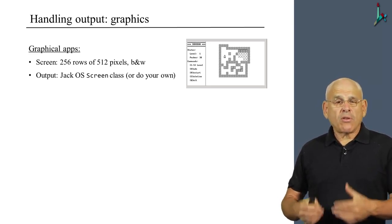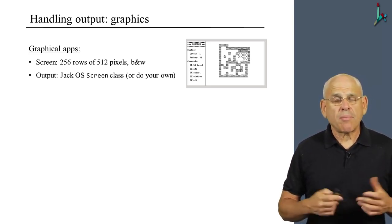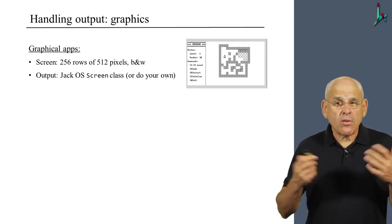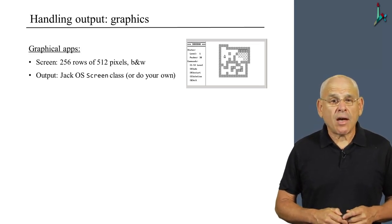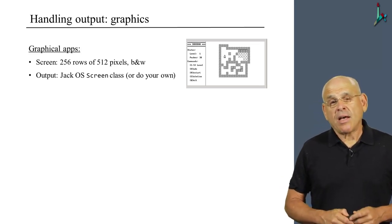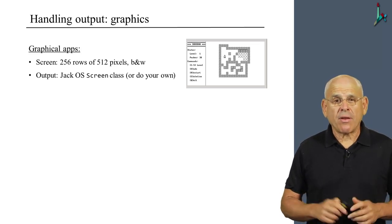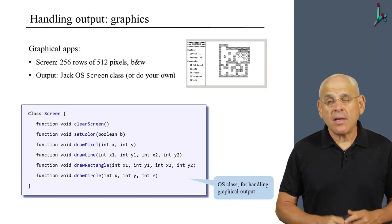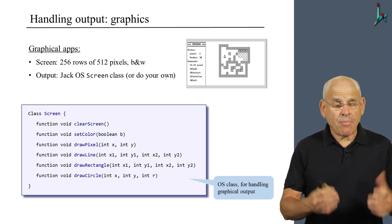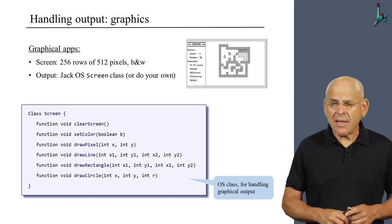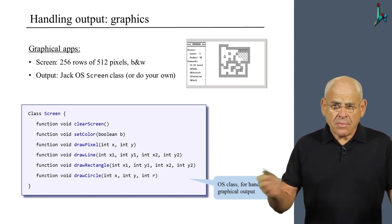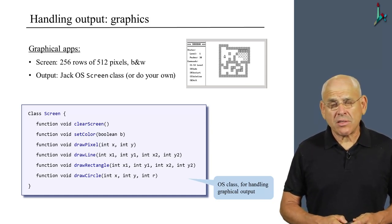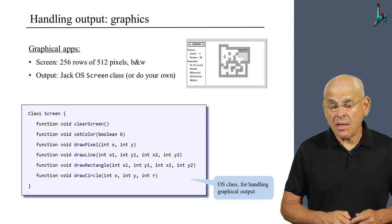If you want to generate graphics, we recommend that you use the supplied Jack OS screen class. Or you can do graphics using your own libraries, something that we will discuss in a separate unit later on in this module. Here's the API of the screen class, which is the name of our graphics package. And as you see, it features a bunch of self-explanatory functions for drawing pixels on the screen.